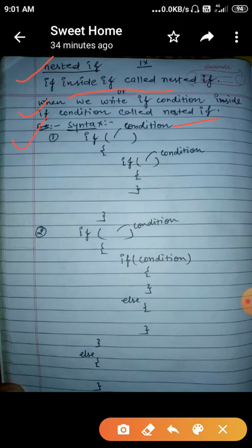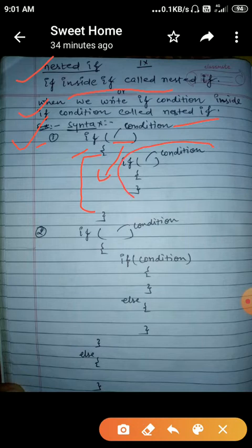The syntax is: first, write the if with a condition. Suppose this condition is true — the cursor will come inside the body of the if. Inside this if, you can see another if. This is called nested if.